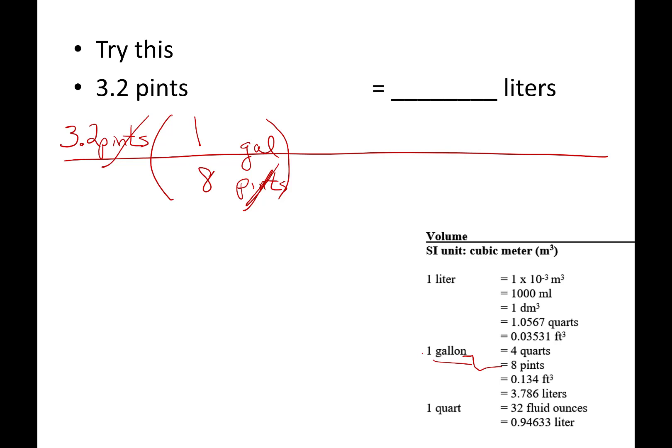Now I want to go gallons to liters. So now I'm going to go gallons to liters. One more TIE fighter. Get rid of gallons. Keep liters. One gallon is that many liters. So one gallon is 3.786 liters. If it is on the top, you multiply. If it's on the bottom, you divide.